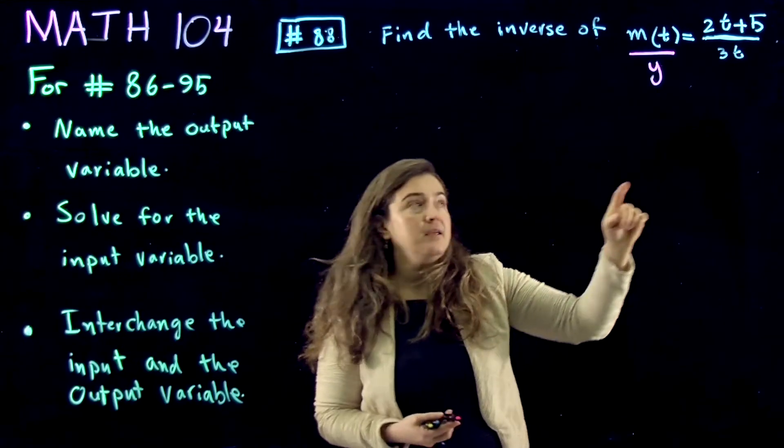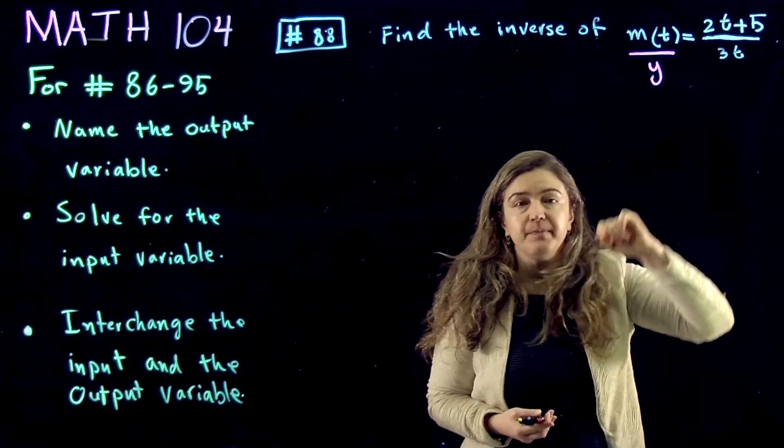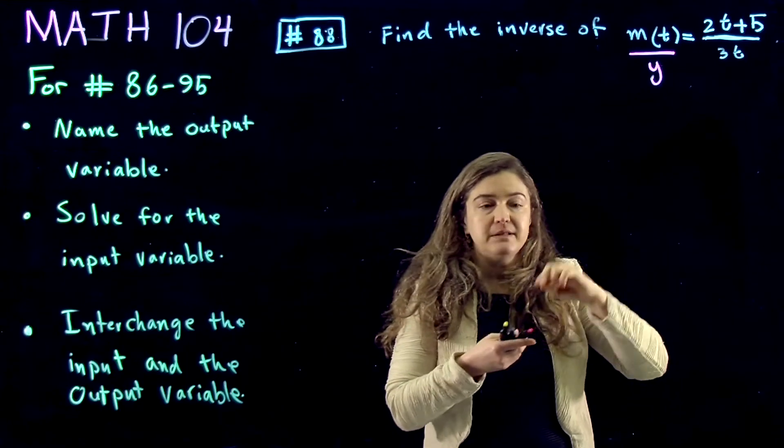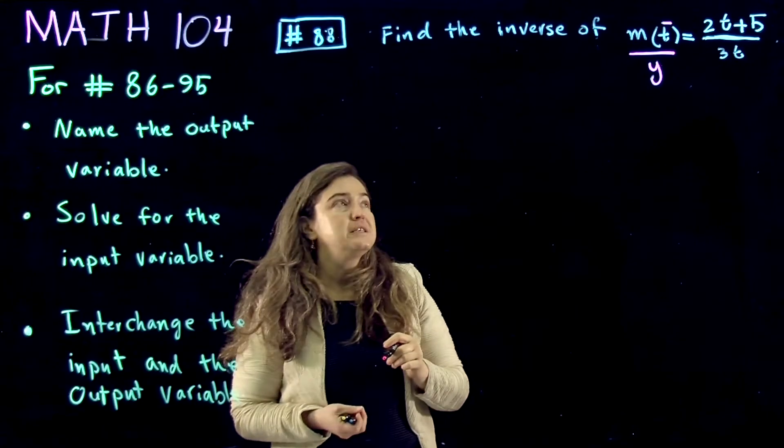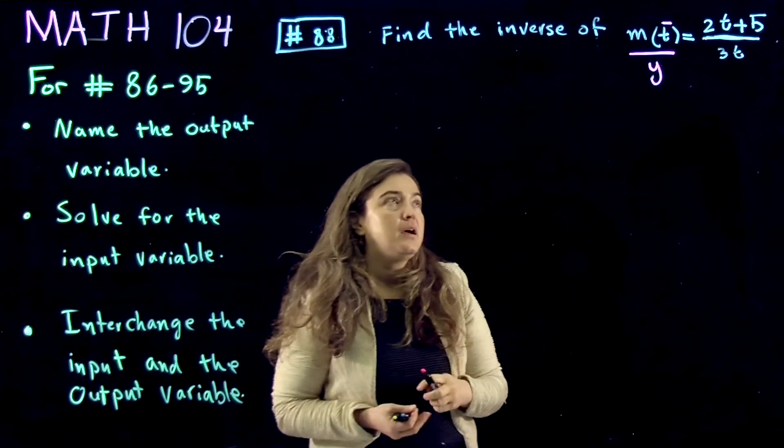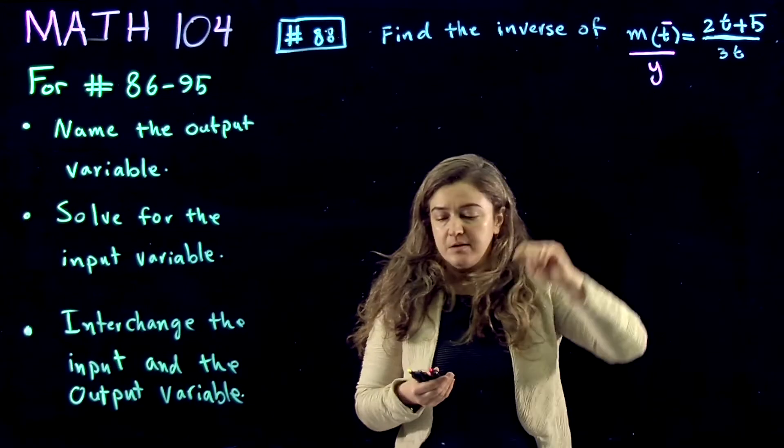We can choose any name other than the input. How do I know what the input is? The input is the one that is inside the function, so t is the input, and the output is y.